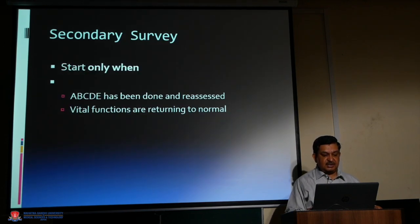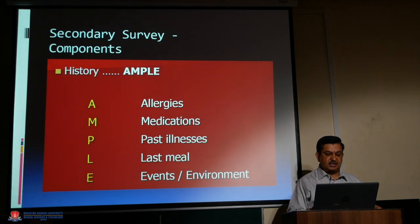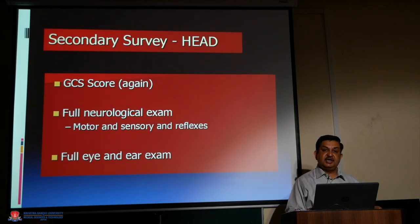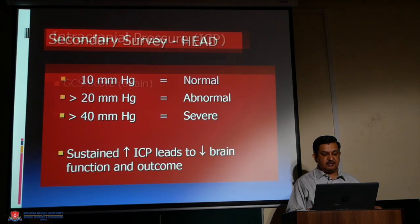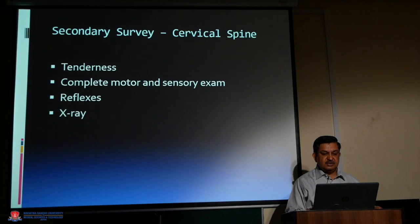The secondary survey starts only when A-B-C-D-E has been completed and reassessed, and vital functions are returning to normal. Components include: history using AMPLE — Allergies, Medications, Past illness, Last meal, Events and environment — followed by GCS score, full neurological examination including motor, sensory, and reflexes, full eye and ear examination, and intracranial pressure assessment. Secondary survey also includes cervical spine evaluation.